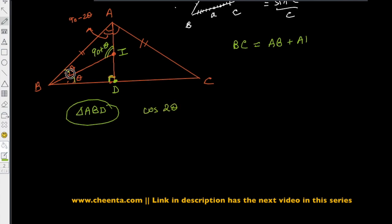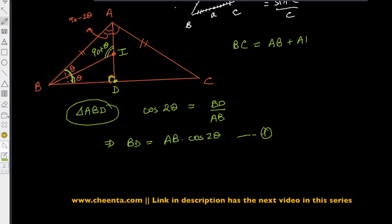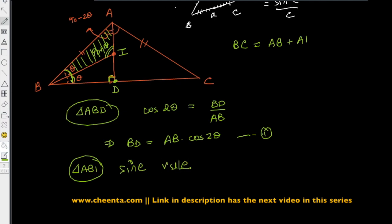First, let's look at triangle ABD. Notice that cosine of 2 theta — that is, the angle at B — equals BD over AB. So BD is simply AB times cosine of 2 theta. Let's record this as our first equation. Then we will go to triangle ABI and apply the sine rule.